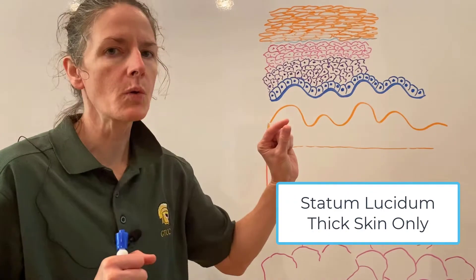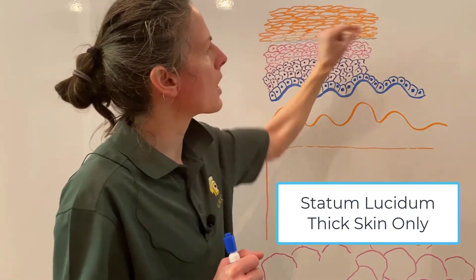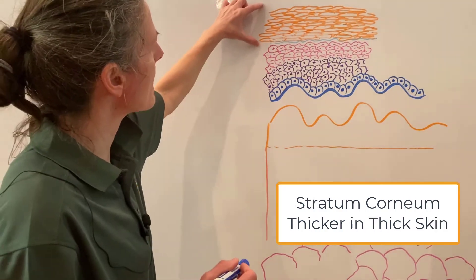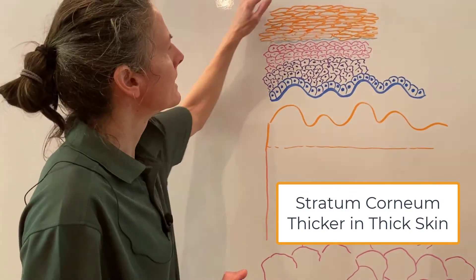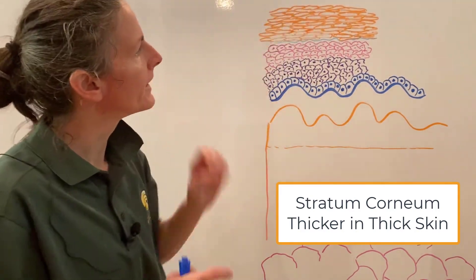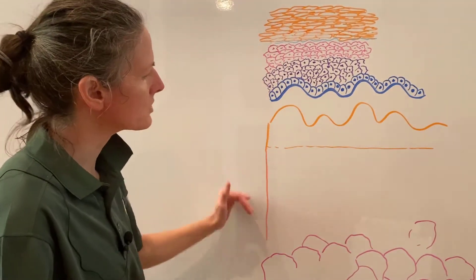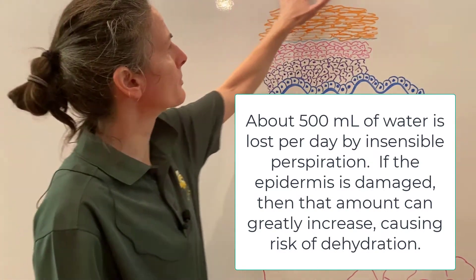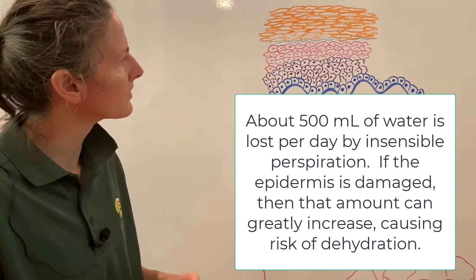In thick skin only, there is a stratum lucidum — a clear layer, just one row of cells thick. Above that is the stratum corneum, the horn layer, where the cells are dead and full of keratin. This tough outer layer resists abrasion, helps hold in moisture to prevent water loss, and provides a barrier against external chemicals and abrasions.